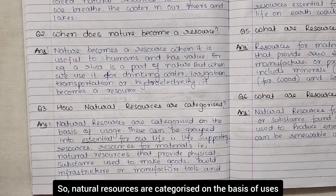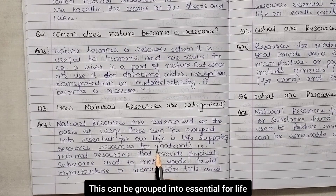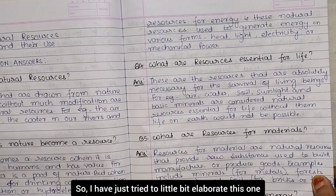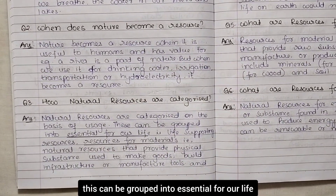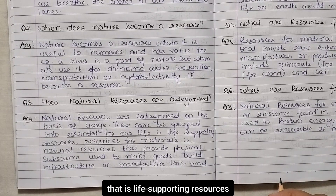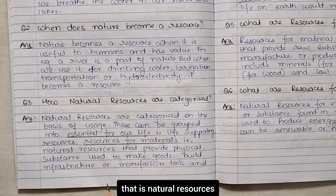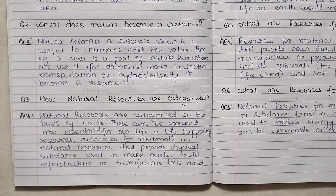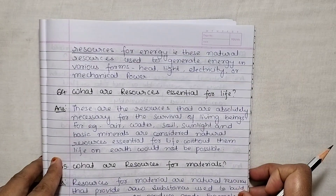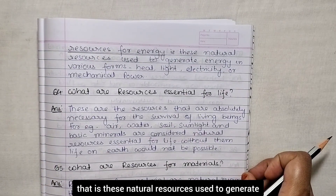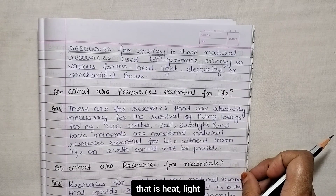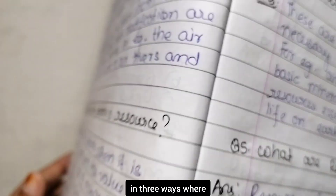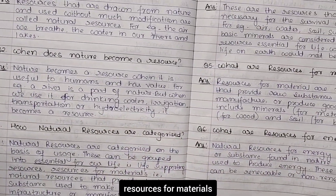Next: how are natural resources categorized? Natural resources are categorized on the basis of uses into three groups: essential for life resources, which are life-supporting resources; resources for material, which are natural resources that provide physical substances used to make goods, build infrastructure or manufacture tools; and resources for energy, which are natural resources used to generate energy in various forms such as heat, light, electricity or mechanical power.